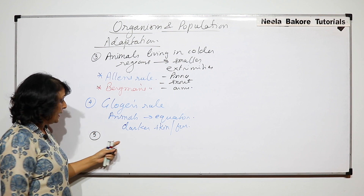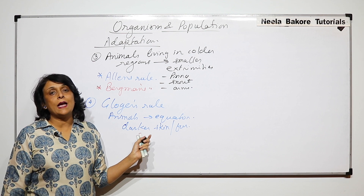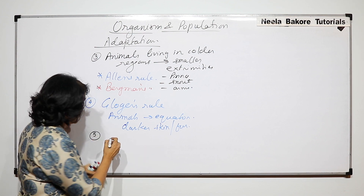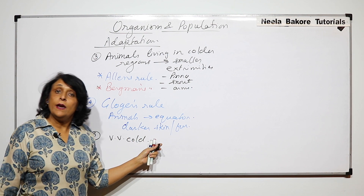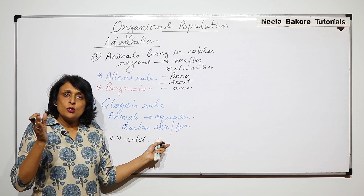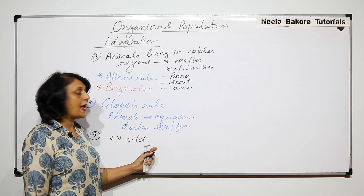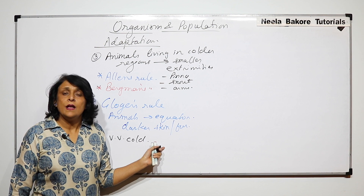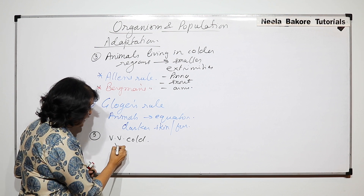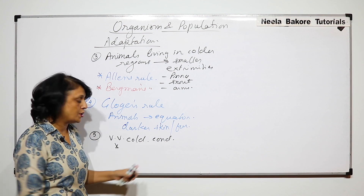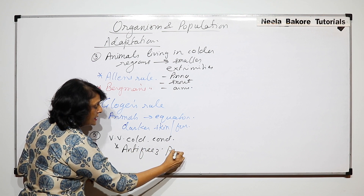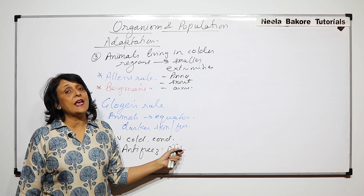Now let us talk about the adaptation seen in organisms living in extremely cold conditions, referring here to some lower organisms. We know that at lower temperatures enzymatic activities slowly decrease and finally stop. So these animals which live in very cold conditions have special proteins called anti-freeze proteins which help them survive in these extreme conditions.